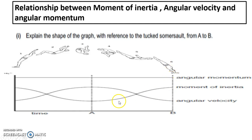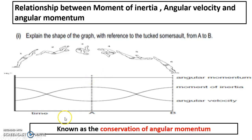So you can kind of see how that works. The graphs going up and down can be a little bit confusing, but that is the type of question you could get with regard to the relationship between moment of inertia, angular velocity, and angular momentum. We know that if moment of inertia is high, angular velocity is going to be low and vice versa. All we have to add on here is that because when one goes high and the other goes low, angular momentum is constant — there is a conservation of angular momentum.